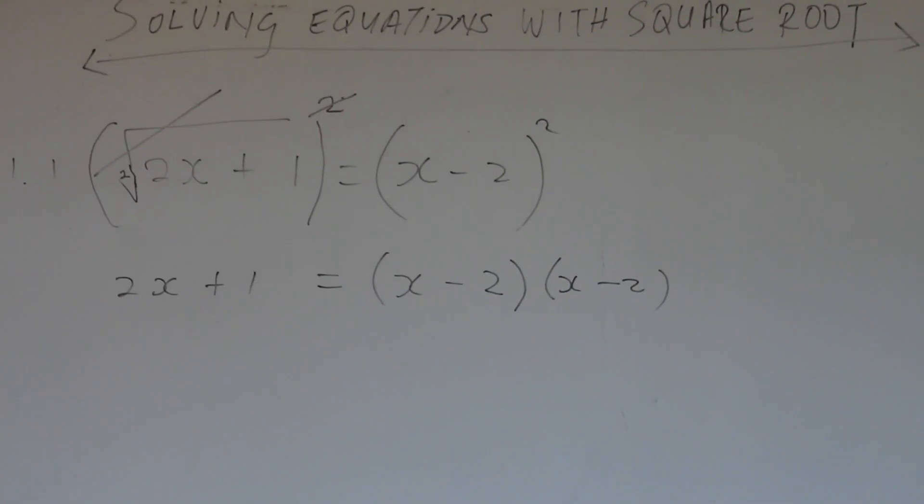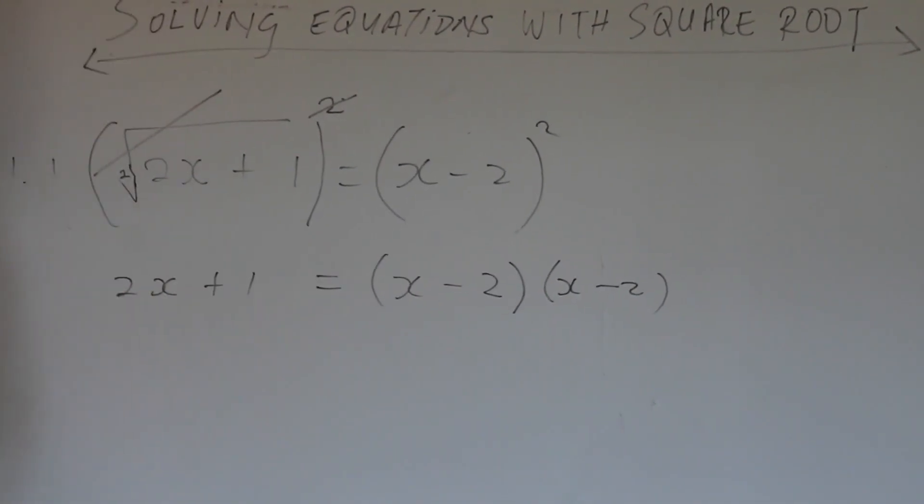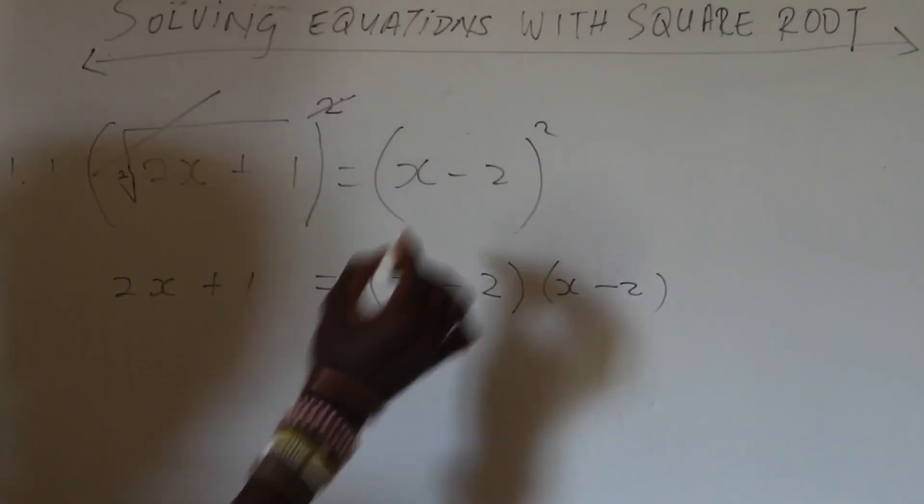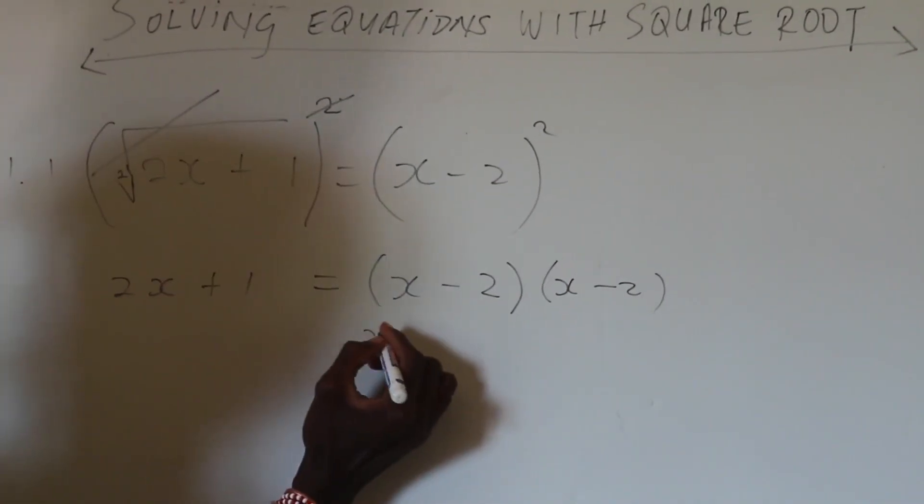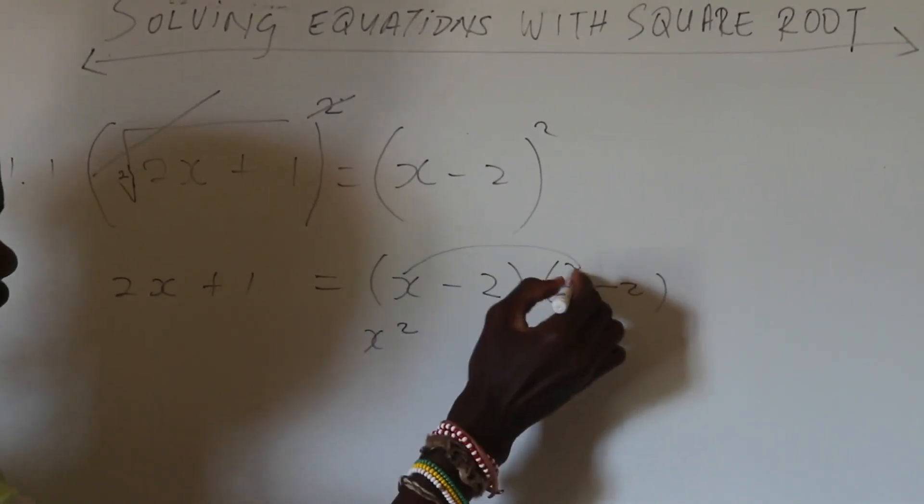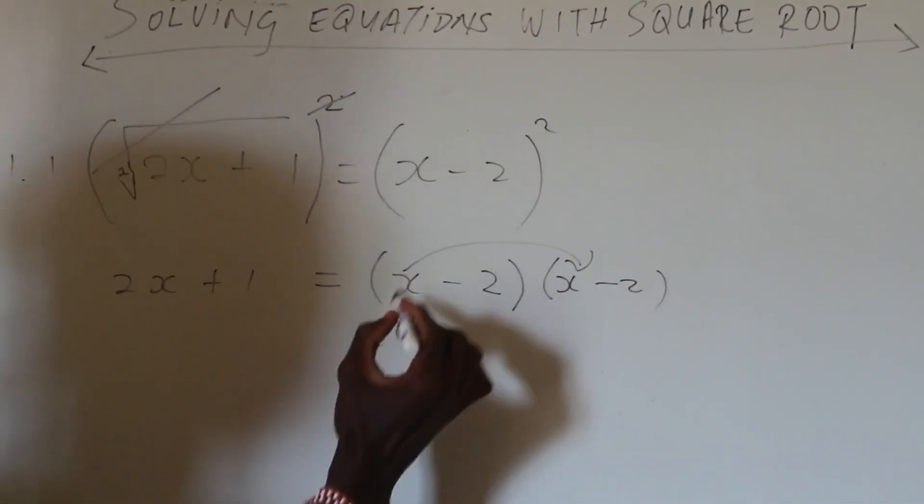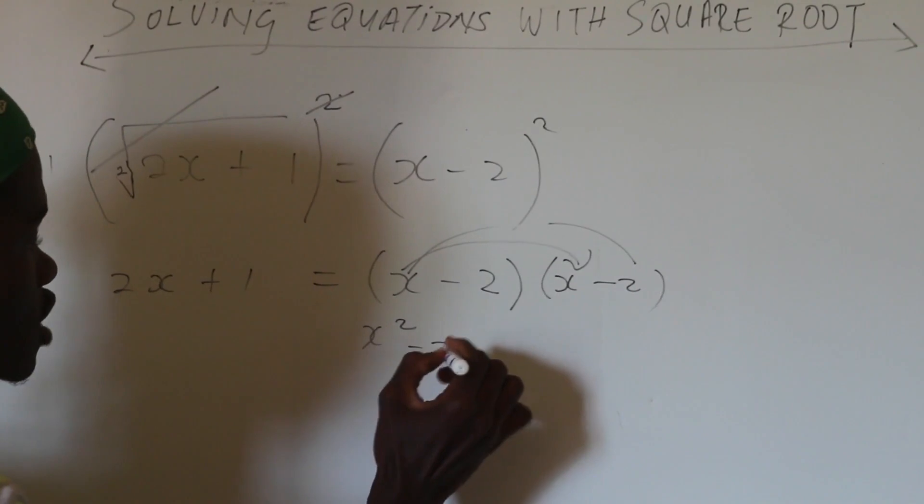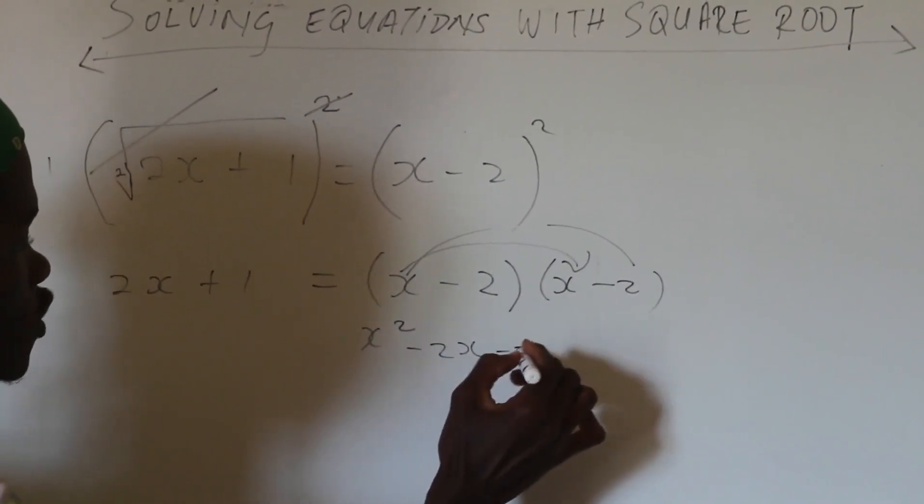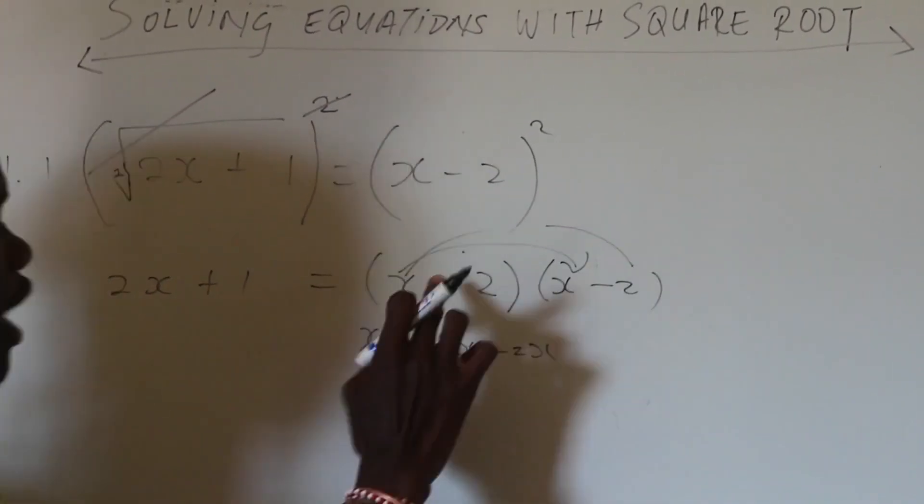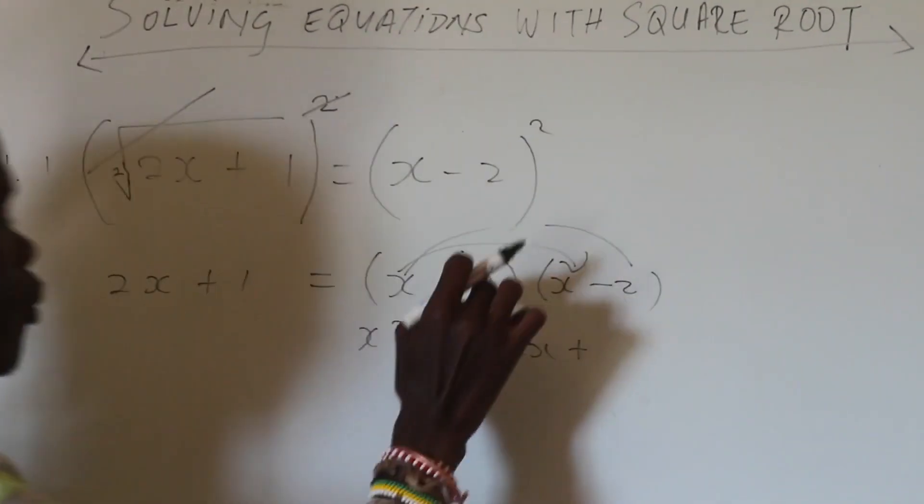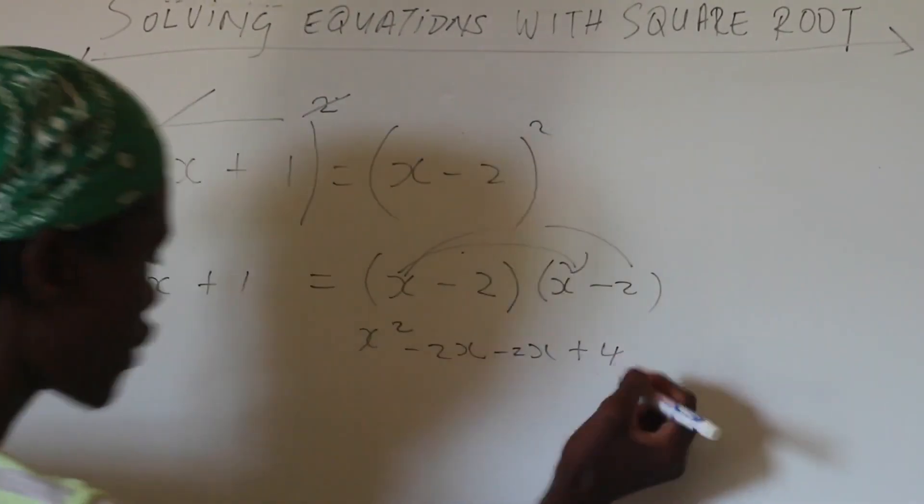Are we not familiar with this? We are. This is BODMAS. Brackets, division, multiplication, addition and subtraction. So x times x you get x squared. Guys I'm distributing. This is the one we call the distribution law. You learned about it in grade 5 or grade 6. x times negative 2 is negative 2x. Negative 2 times negative 2, and negative and negative is a positive. 2 times 2 is 4.